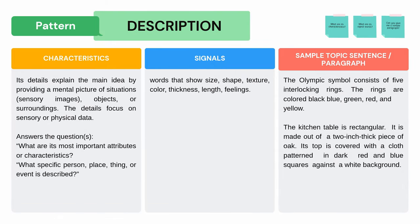Description: Its details explain the main idea by providing a mental picture of situations, sensory images, objects, or surroundings. The details focus on sensory or physical data. It answers the question: What are its most important attributes or characteristics? What specific person, place, thing, or event is described? Sample paragraphs: The Olympic symbol consists of five interlocking rings. The rings are colored black, blue, green, red, and yellow. The kitchen table is rectangular. It is made out of a two-inch thick piece of oak. Its top is covered with a cloth pattern in dark red and blue squares against a white background. Do you notice any signal words from the paragraph that tell you it is a description? Pause the video and find out.